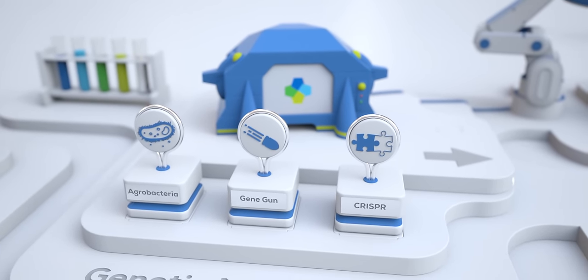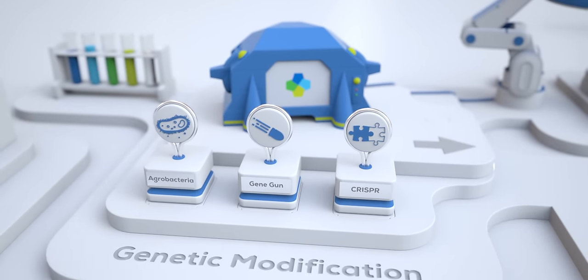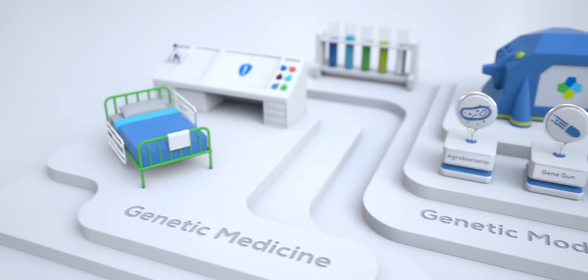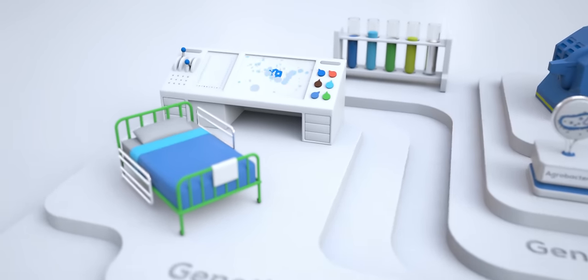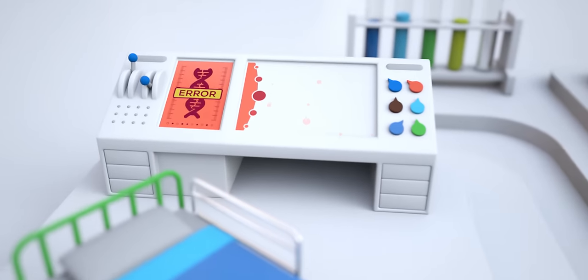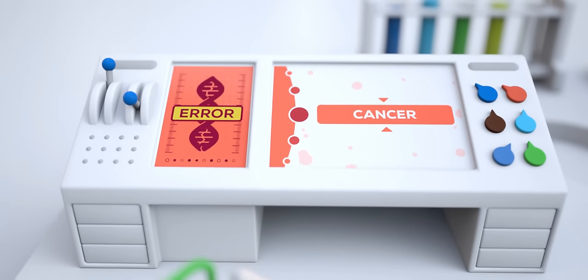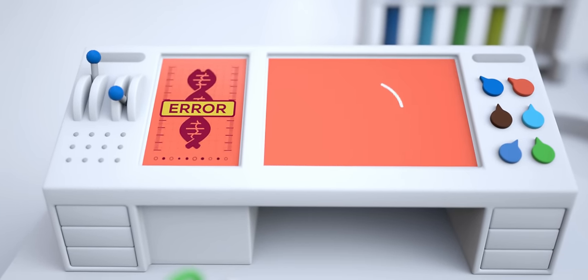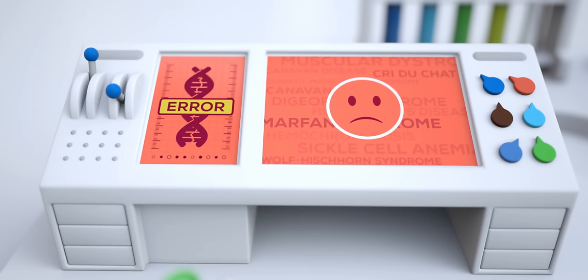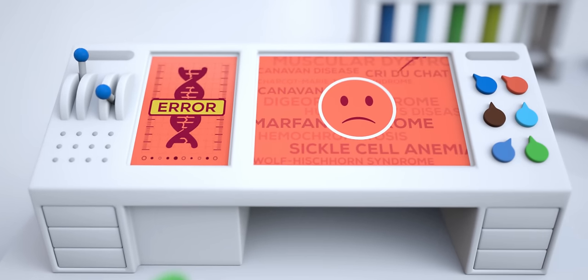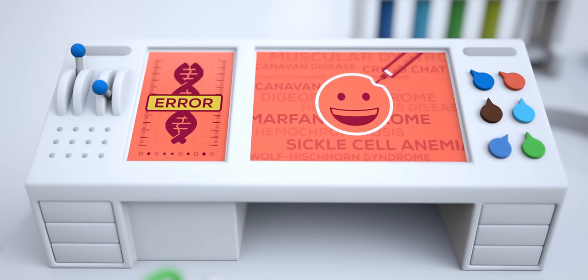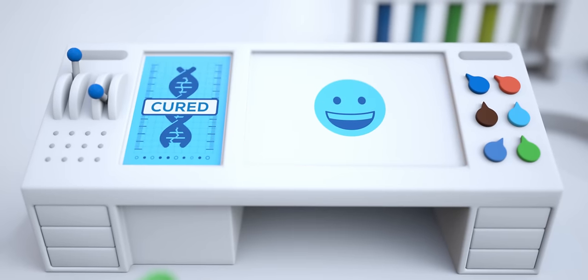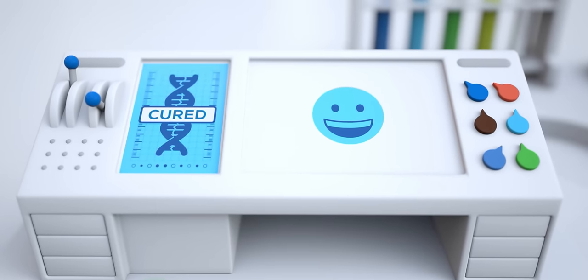But potentially even more groundbreaking for genetic modification technologies are the medical implications. Many of our worst remaining diseases involve errors within our DNA. Cancer, cystic fibrosis, Huntington's, and many other degenerative ailments have a genetic basis. In the very near future, treating such diseases might well be as simple as repairing our DNA, as routinely as we repair broken bones today.